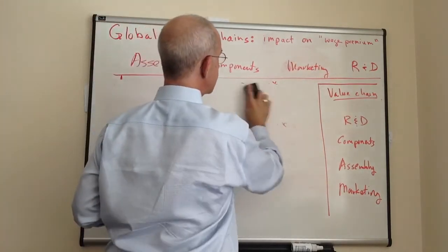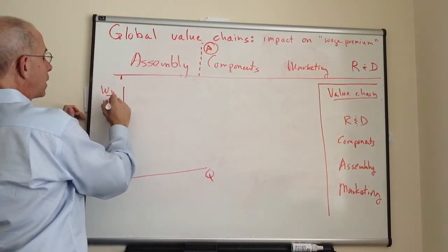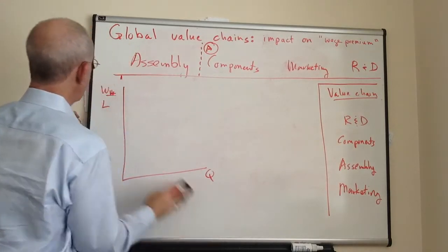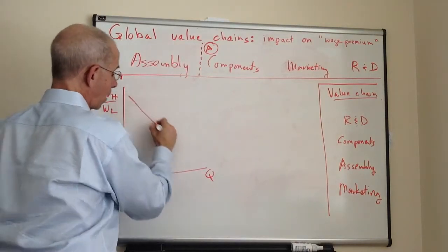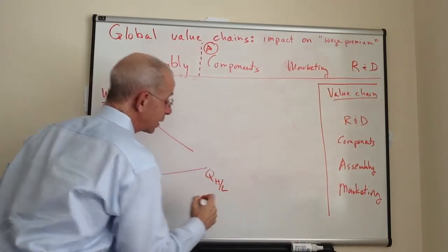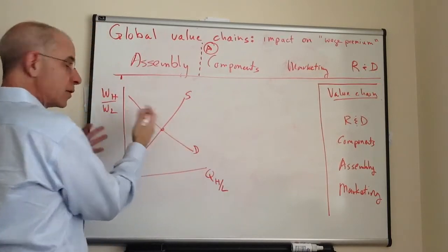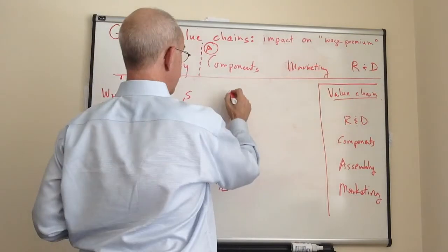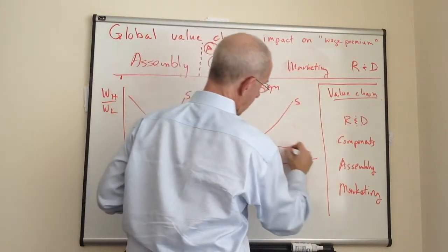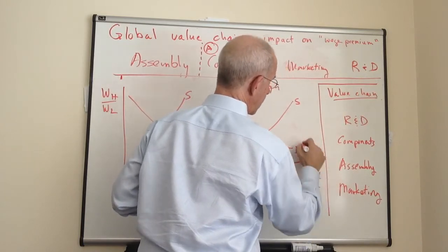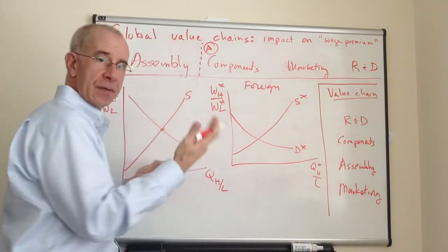Let's depict this in terms of relative supplies and relative demands in the home and foreign countries. We've got the relative wage in the home country on the vertical axis and the quantity of high-skilled workers relative to low-skilled workers on the horizontal axis. The intersection of supply and demand gives you the relative wage. And then in the foreign country, you have the analog supply and demand curves. This gives us our initial situation.